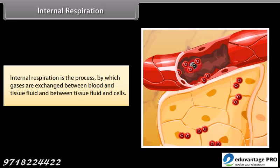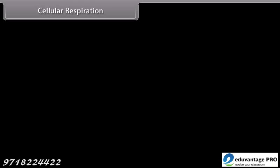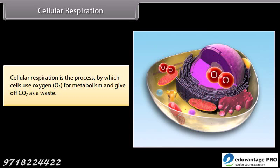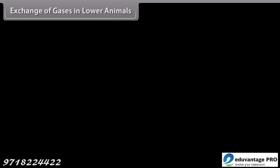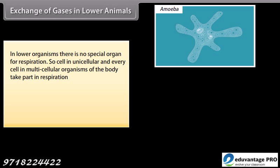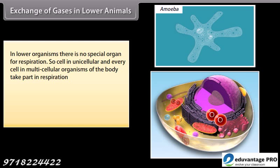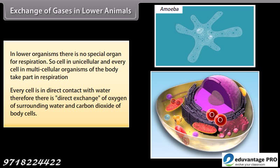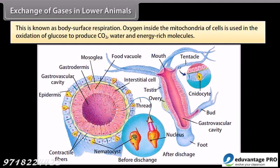Internal respiration is the process by which gases are exchanged between blood and tissue fluid, and between tissue fluid and cells. Cellular respiration is the process by which cells use oxygen for metabolism and give off CO2 as waste. In lower organisms there is no special organ for respiration, so every cell in unicellular organisms and every cell in multicellular organisms takes part in respiration. Every cell is in direct contact with water, therefore there is direct exchange of oxygen from surrounding water and carbon dioxide of body cells. This is known as body surface respiration.